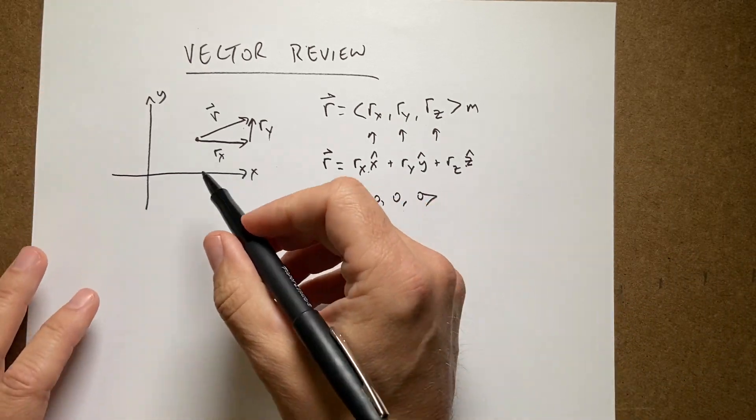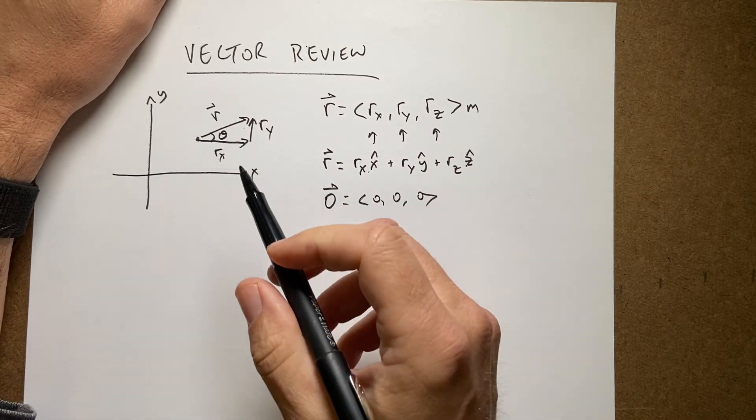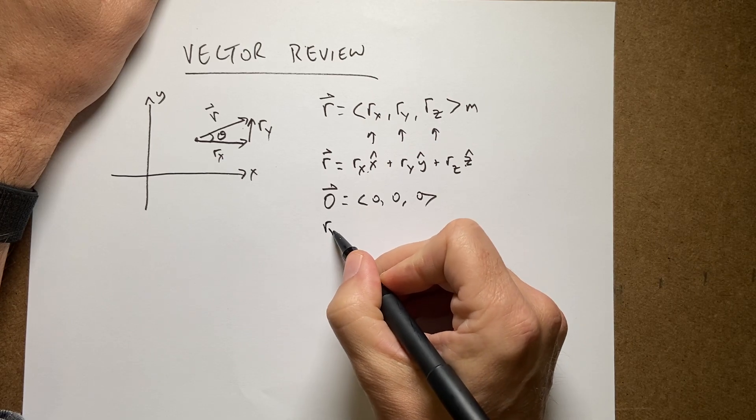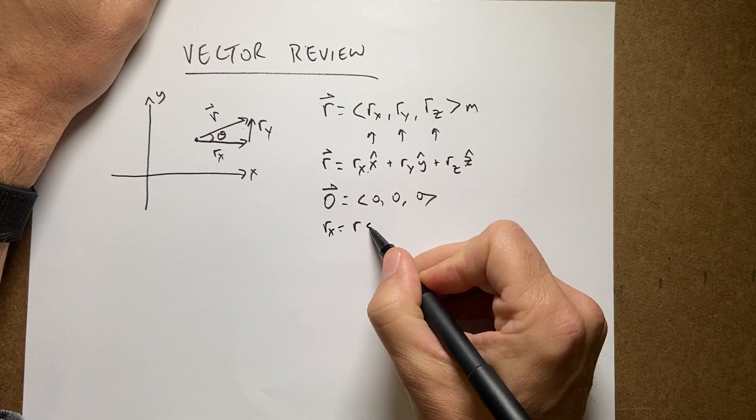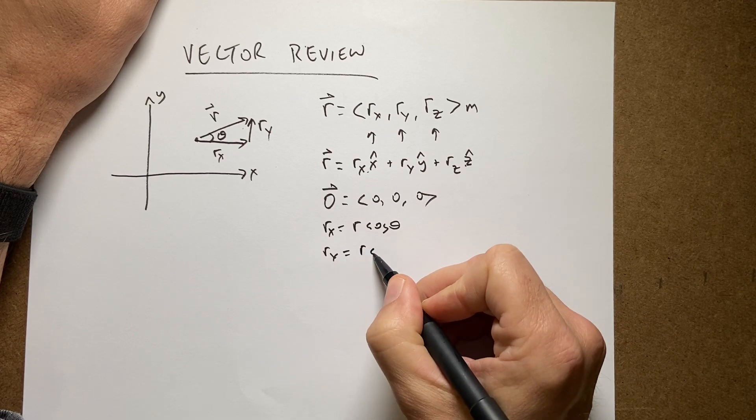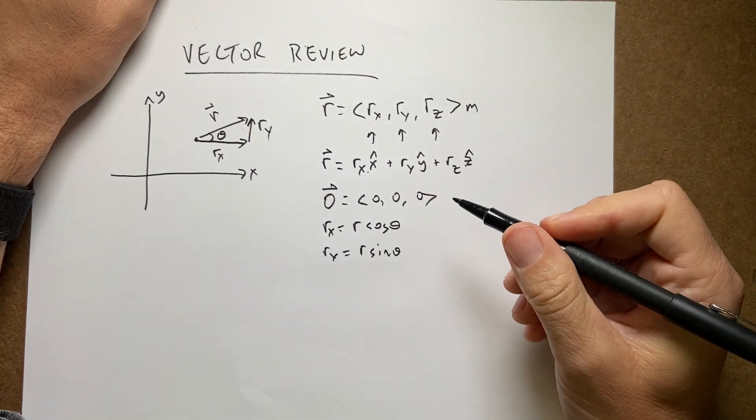What if you want to find these components? Well, let's say I have this angle theta right there between the vector and the x-axis. In that case, rx would be r cosine theta, ry would be r sine theta, and then z. I didn't have a z component.